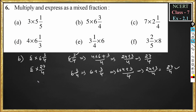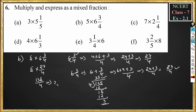5 into 27 is 135, divided by 4. We should convert this into a mixed fraction by dividing 135 by 4. 4 threes are 12, bring down 15; 4 threes are 12 again, remainder is 3. We can't further divide 3 by 4, so we put 33 as the whole number, remainder 3 in the numerator, and divisor 4 in the denominator. The answer is 33³/₄.